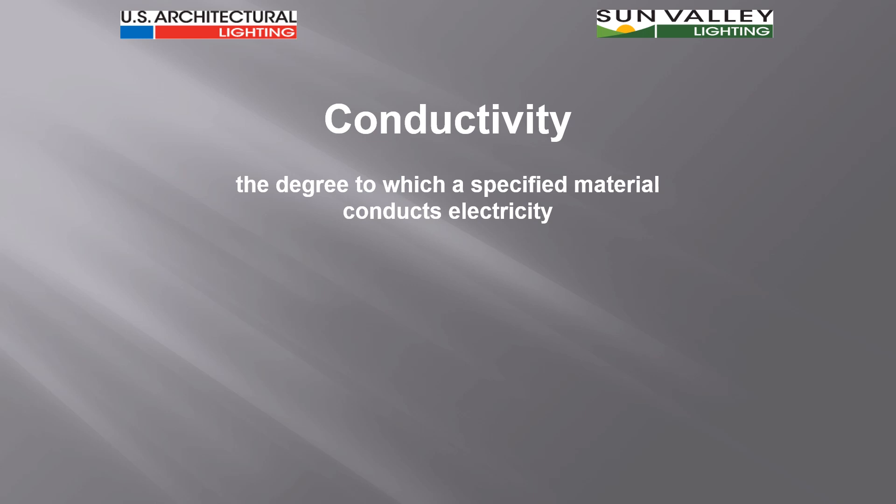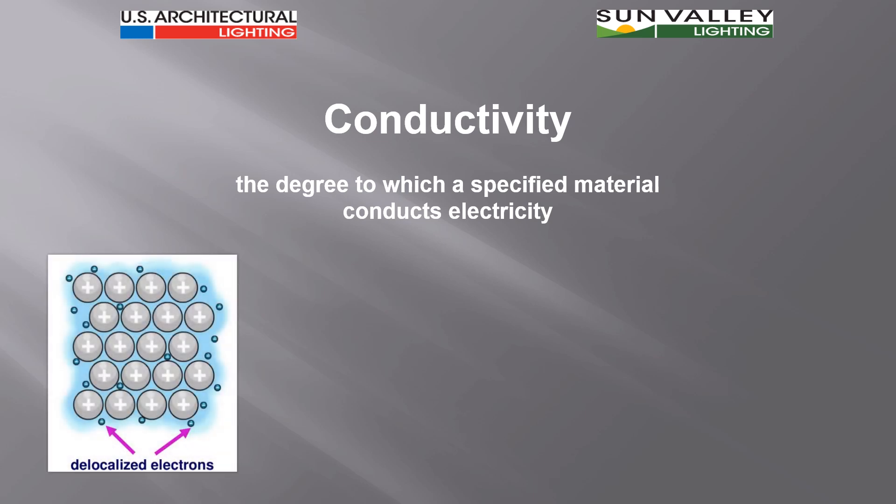When we consider the degree to which a specified material conducts electricity, that's normally the term people think of when we think of conductivity, and it all relates to the element being considered. A conductor — a piece of copper wire, aluminum wire, any kind of wire that carries electricity — has free electrons in its atomic structure so that these electrons flow along the wire. If there are no free electrons, then we don't have a conductor; what we have instead is an insulator.